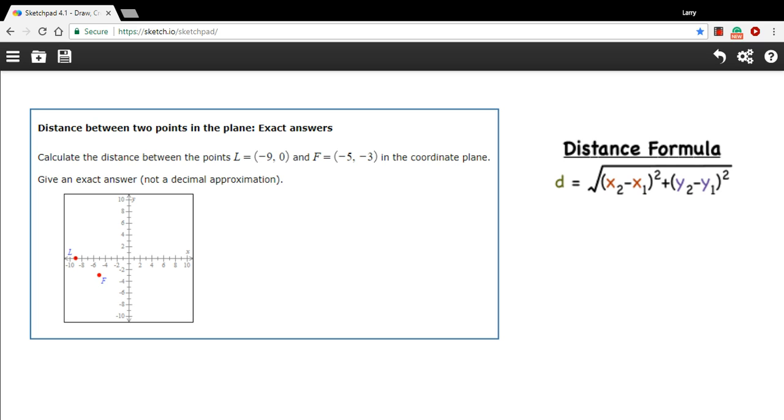So the distance between these two points is a straight line. But if we drew along the X and then along the Y and made a right triangle, what we'd have here is something we could apply the Pythagorean theorem to.